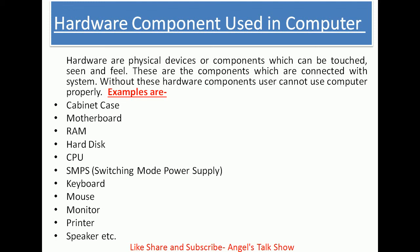Examples of hardware components are: cabinet case, motherboard, RAM, hard disk, CPU (Central Processing Unit), SMPS (Switching Mode Power Supply), keyboard, mouse, monitor, printer, speaker, etc. All these components are known as hardware components and are very essential and important for the computer to perform its operations normally.